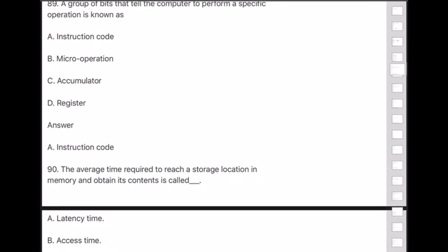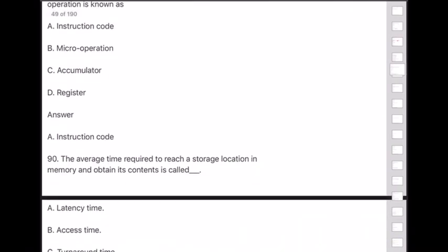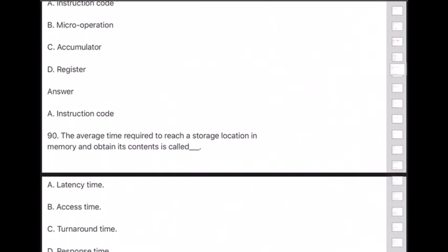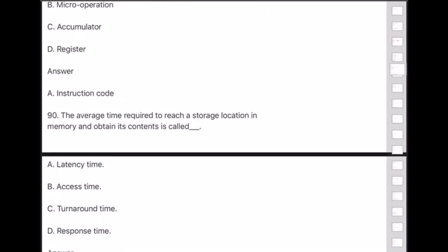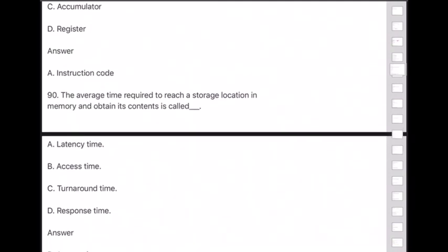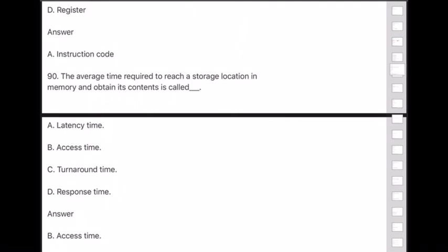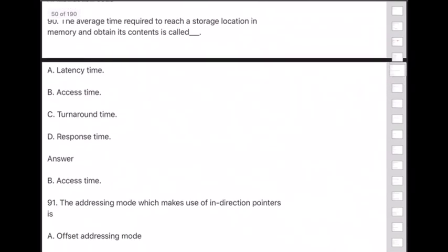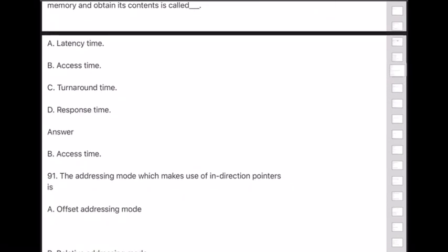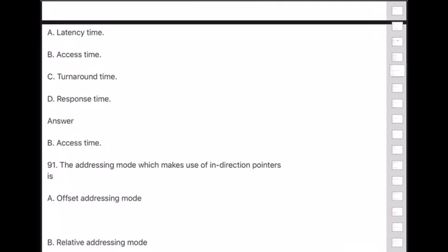Question 90: The average time required to reach a storage location in memory and obtain its contents is called — answer is option B — access time.